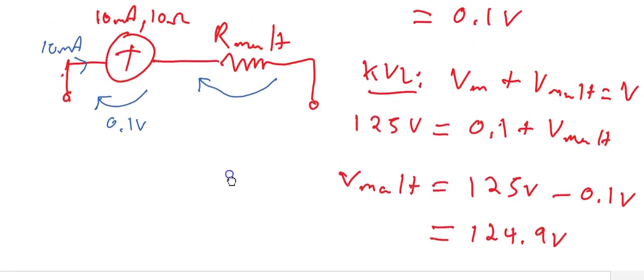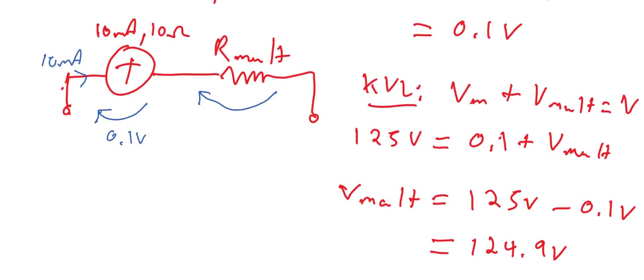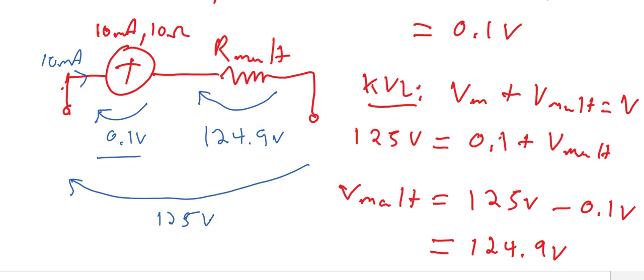So if we think about the circuit we've drawn, that means that 0.1 volts across the movement added to 124.9 volts across the multiplier resistor gives us a total voltage across the meter of 125 volts, and this occurs for maximum current 10 milliamps.